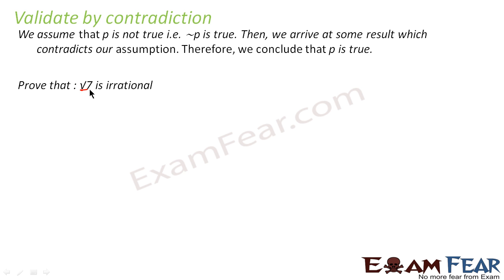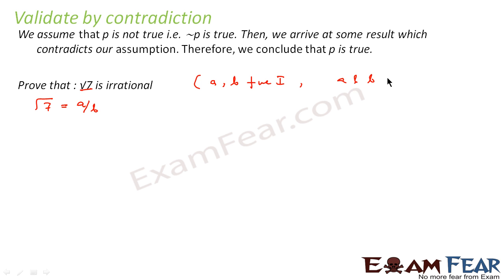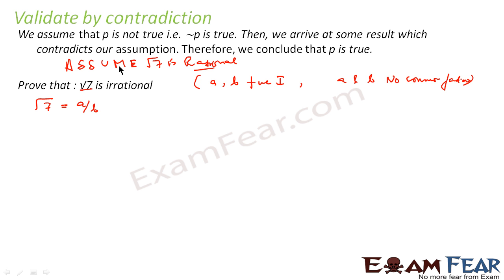We have to prove that √7 is irrational. Now let's assume that √7 is rational. If √7 is rational, then we can say that √7 can be represented in the form a/b, where a and b are positive integers, and a and b have no common factor.